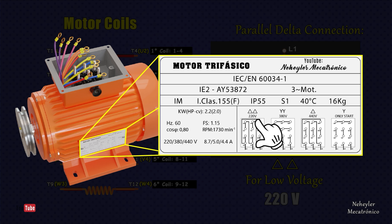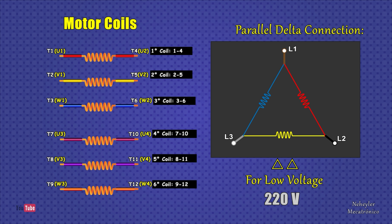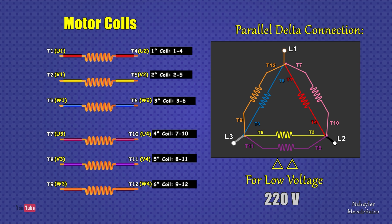Now let's look at the parallel delta or double triangle configuration. This configuration is used for low three-phase voltage. First, a triangle is formed with three coils. Reading the terminals clockwise: terminals 1 and 4 correspond to the first coil, 2 and 5 to the second coil, 3 and 6 to the third coil. The other three remaining coils are placed in parallel on each side of the triangle: terminals 7 and 10 parallel to the first coil, 8 and 11 parallel to the second coil, 9 and 12 parallel to the third coil. The three power cables exit from each vertex of the triangle.